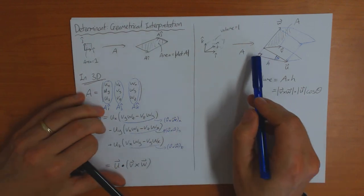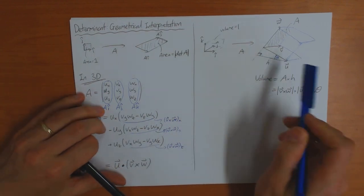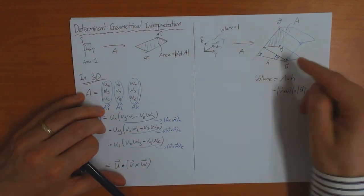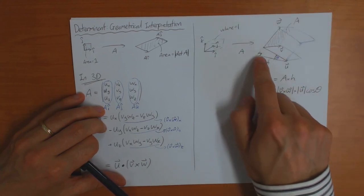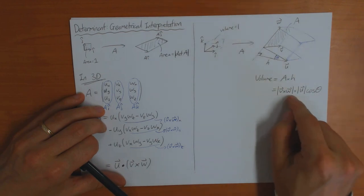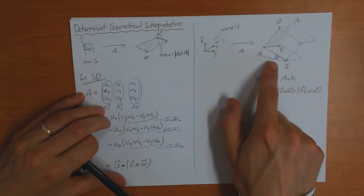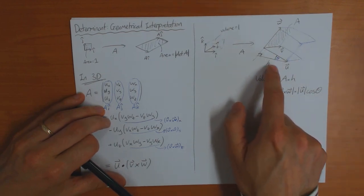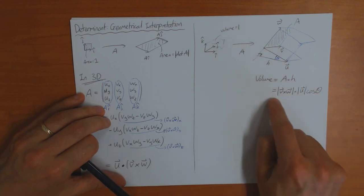But this line here, the line of which length is H, is perpendicular to V and W. If this angle is 90 degrees. Therefore, it is parallel to V cross W. So the angle theta is the angle between U and V cross W.